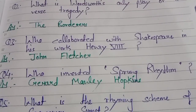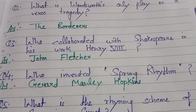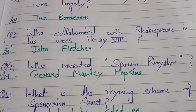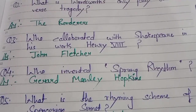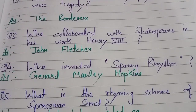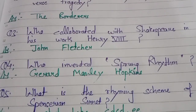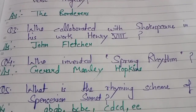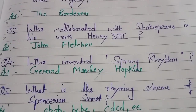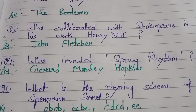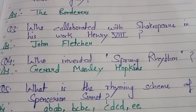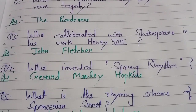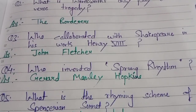Who collaborated with Shakespeare in his work Henry VIII? Henry VIII is a historical play by William Shakespeare. Many options may cause confusion — Edward VIII, Henry VIII — but Henry VIII is Shakespeare's historical play. The one who collaborated with Shakespeare in Henry VIII is John Fletcher.